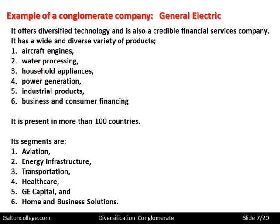Its segments, related to the products, include aviation, transport, healthcare, financial services, and so on. So it's big, it's conglomerate and it's diverse. This is in stark contrast to the concentric diversification that's dealt with in another video.